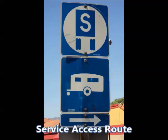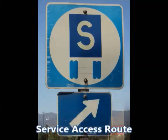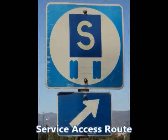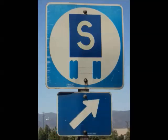A service access route is solely for the purpose of fuel, food, lodging, and repair. Service routes are designated by traffic signs with a white S on a blue background.